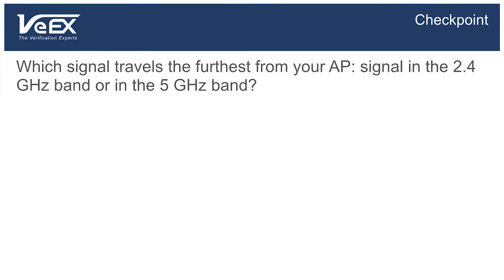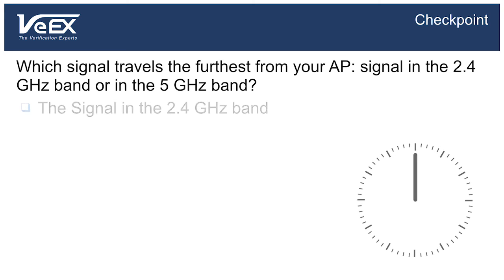Okay, time for a little quiz. Assuming there are no obstacles, and that the transmitter power is the same, which signal travels the furthest from your Wi-Fi access point? A signal in the 2.4 GHz band, or in the 5 GHz band? The 2.4 GHz signal will travel further than a 5 GHz signal. This is because signals with longer wavelengths travel farther.